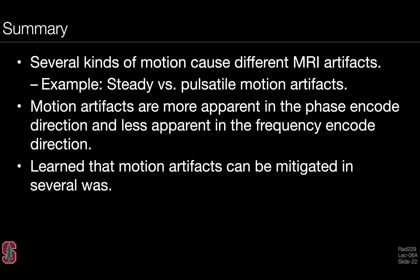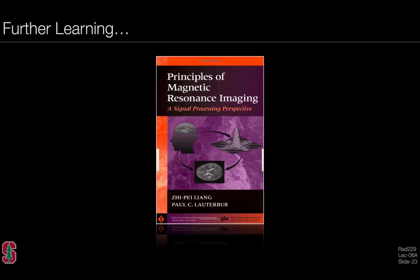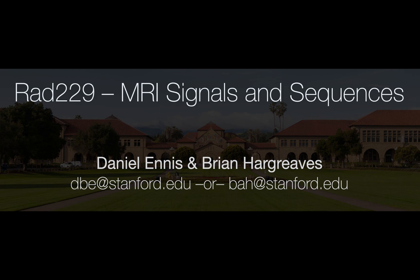In summary, we discussed several kinds of motion and how they can cause different MRI artifacts. In particular, we looked at steady and pulsatile motion artifacts. Moreover, motion artifacts are more apparent in the phase encode direction and less apparent in the frequency encode direction. We didn't get into the mathematical details of why this is the case, but it is interesting to explore that topic. We also learned that motion artifacts can be mitigated in several ways. Lastly, I'll just point you to this as a reference. There's some great material here if you want to better understand the impact that motion has, for example, on the point spread function of an MRI imaging system. Now that we know a little bit about how motion can corrupt images, we might begin to think about how do we compensate for motion in MRI. For that, we'll turn to the next lecture. You can click the links below and join us again for RAD229 MRI Signals and Sequences. Thank you.